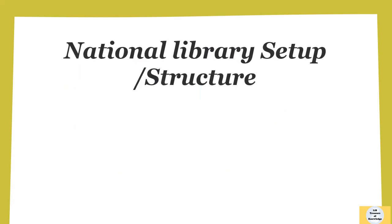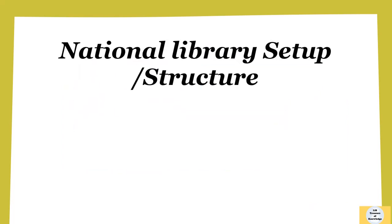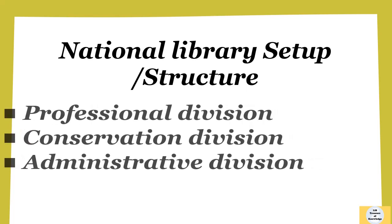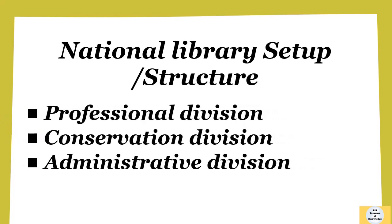The National Library is divided into three divisions. The first is the Professional Division, the second is the Conservation Division, and the third is the Administrative Division.